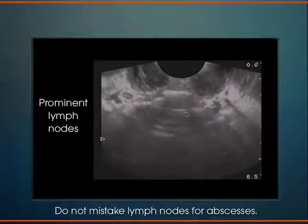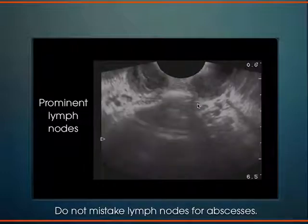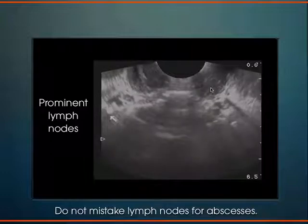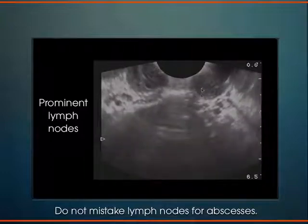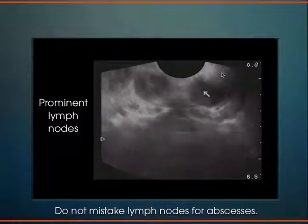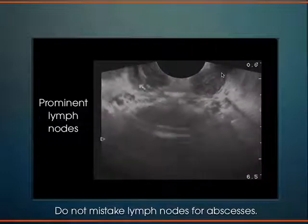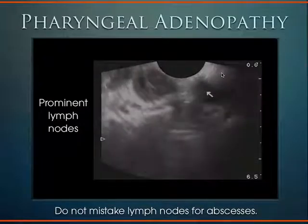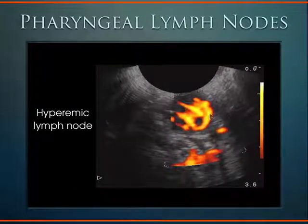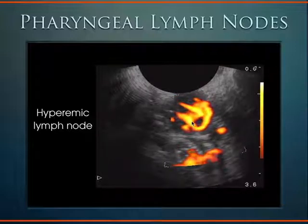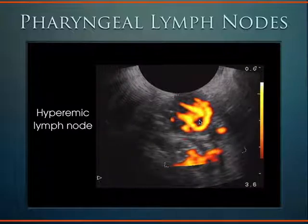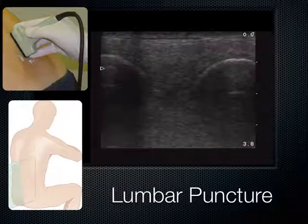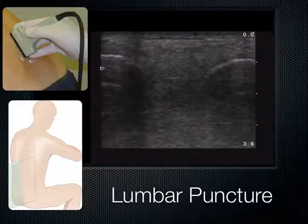Sometimes you're not sure if it's an abscess — it turns out these are just prominent lymph nodes. As the patient swallows, you'll actually visualize the lymph nodes moving toward each other. These are bilateral prominent lymph nodes — you wouldn't want to put a needle in those unnecessarily. Once you see pharyngeal adenopathy, you can confirm it's a lymph node using power flow Doppler. Lymph nodes can be quite vascular, and this hyperemic lymph node lights up with power Doppler confirming it's a lymph node and not an abscess. An abscess would not light up with power Doppler.